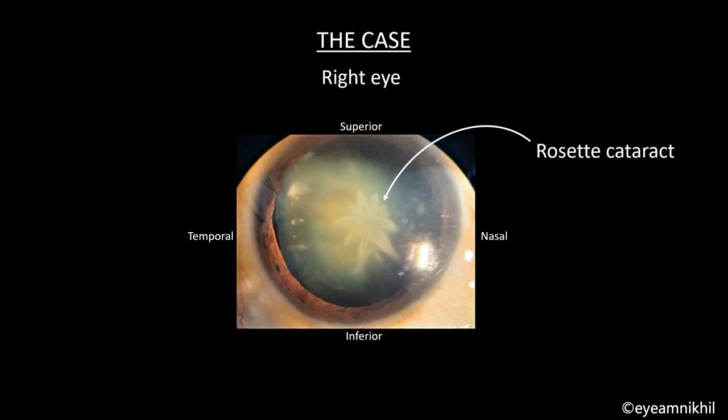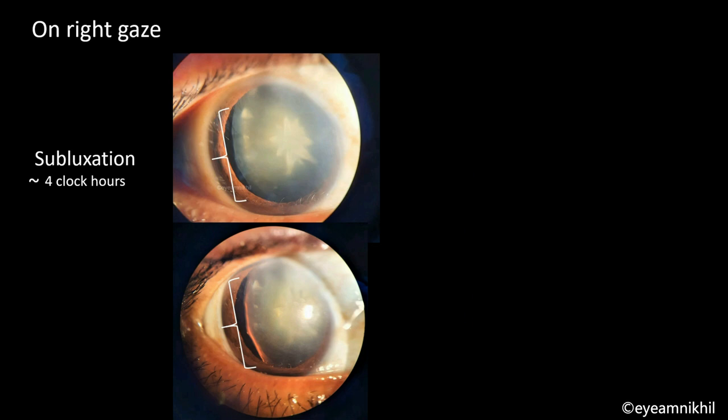In primary gaze, we can see a rosette cataract and around 2 o'clock hours of subluxation in the temporal area. On right gaze, the subluxation appears to be around 4 o'clock hours, from 7 o'clock to 11 o'clock. It is therefore always important to assess the degree of subluxation by asking the patient to look in the direction of subluxation.